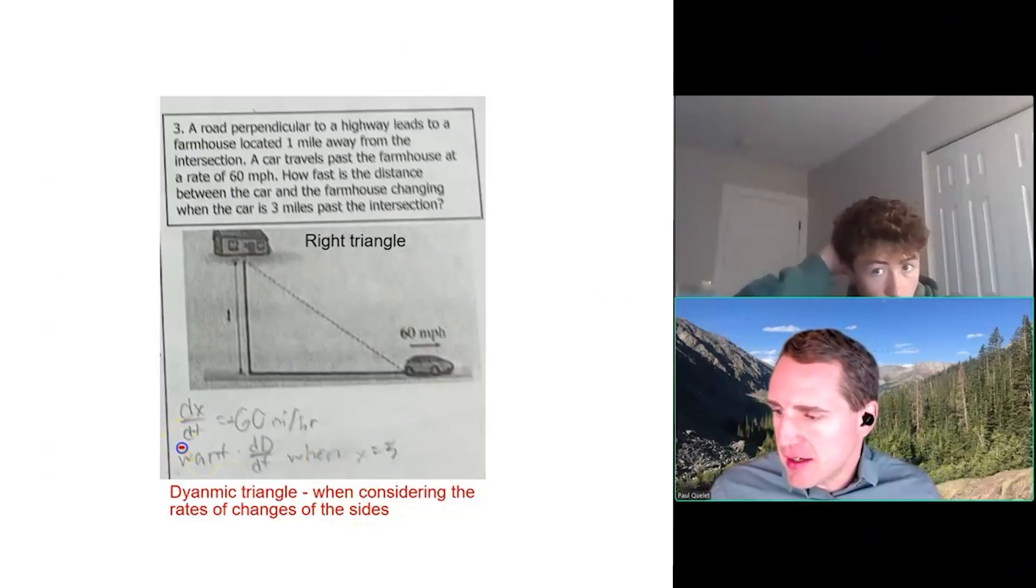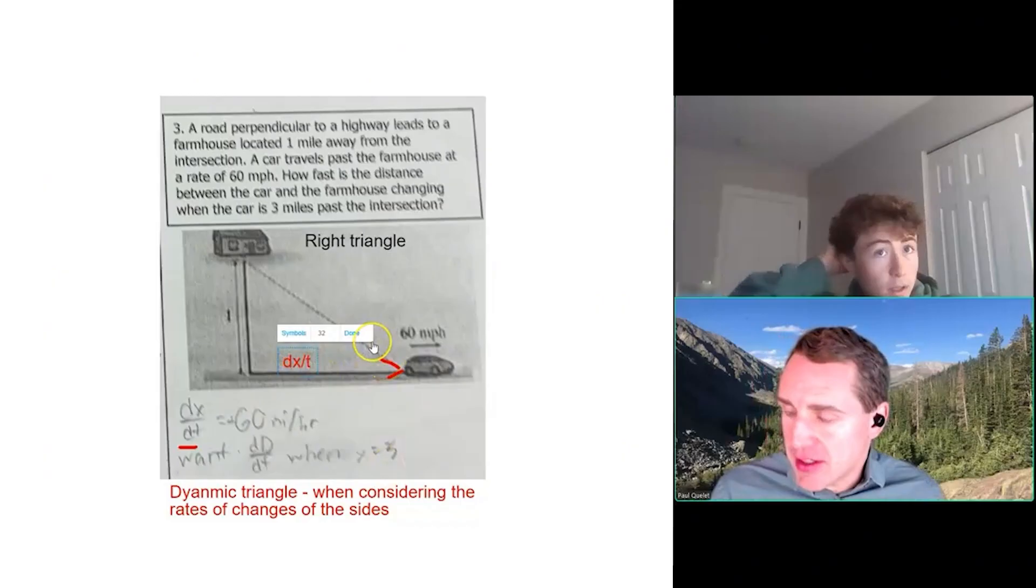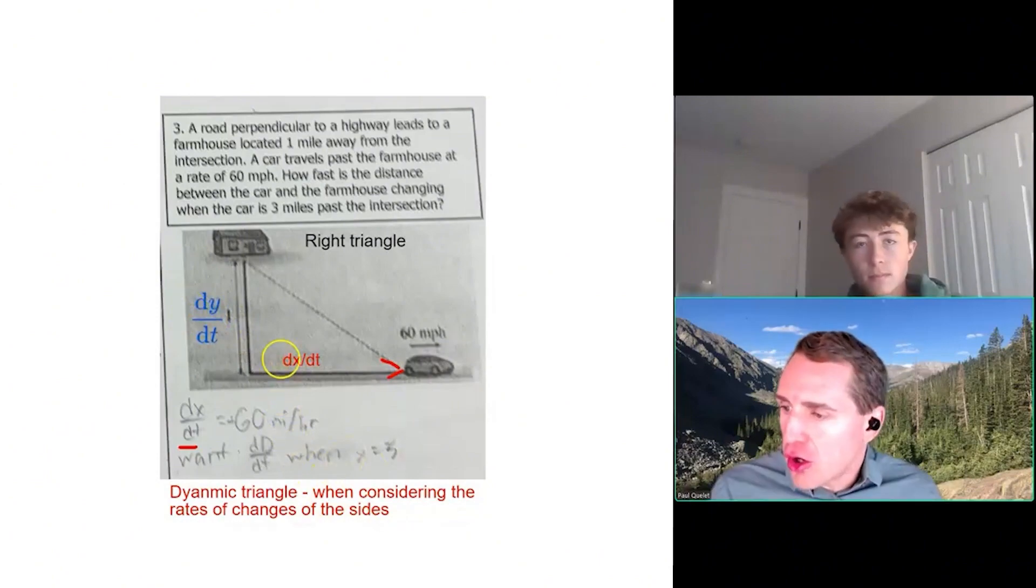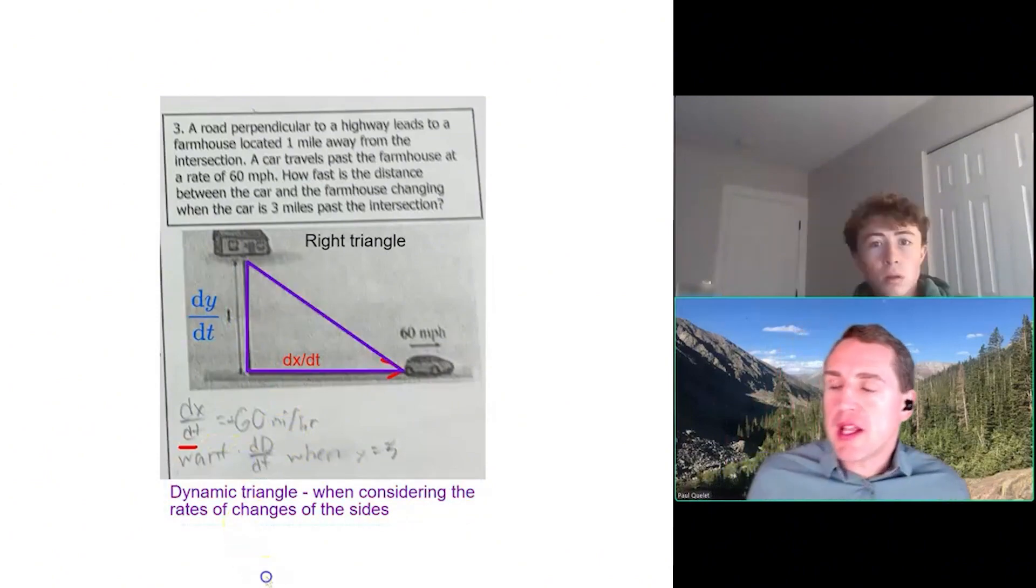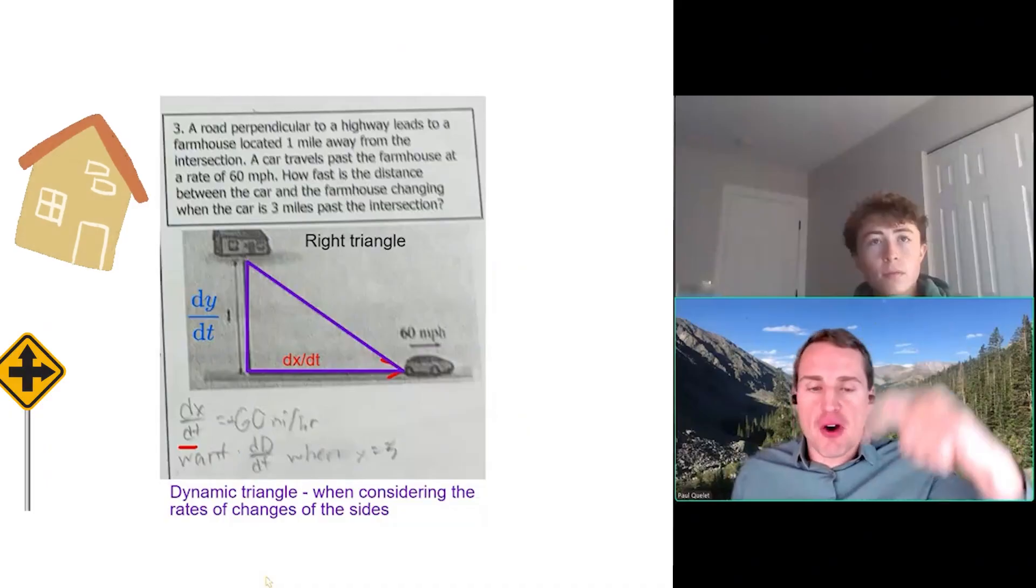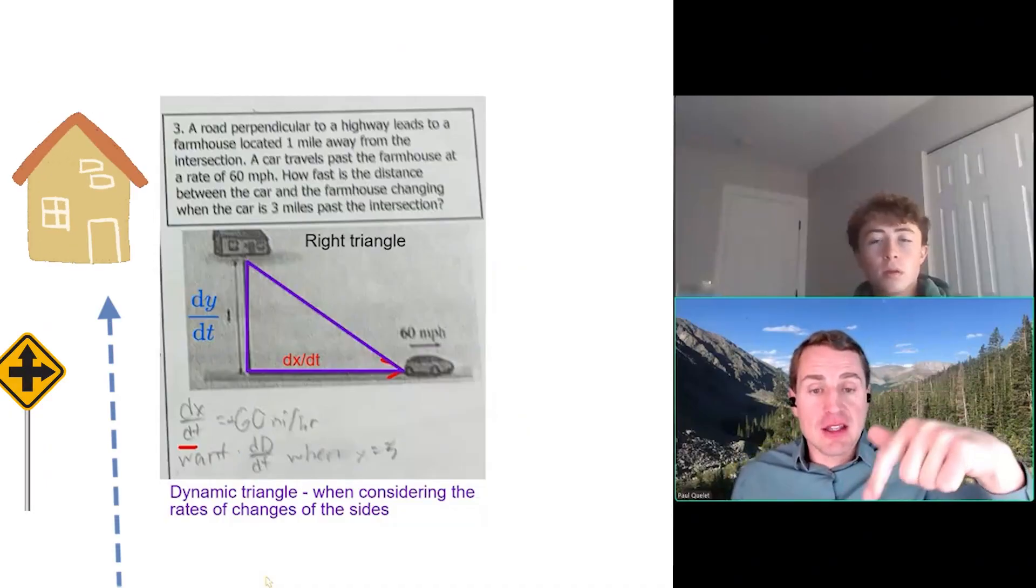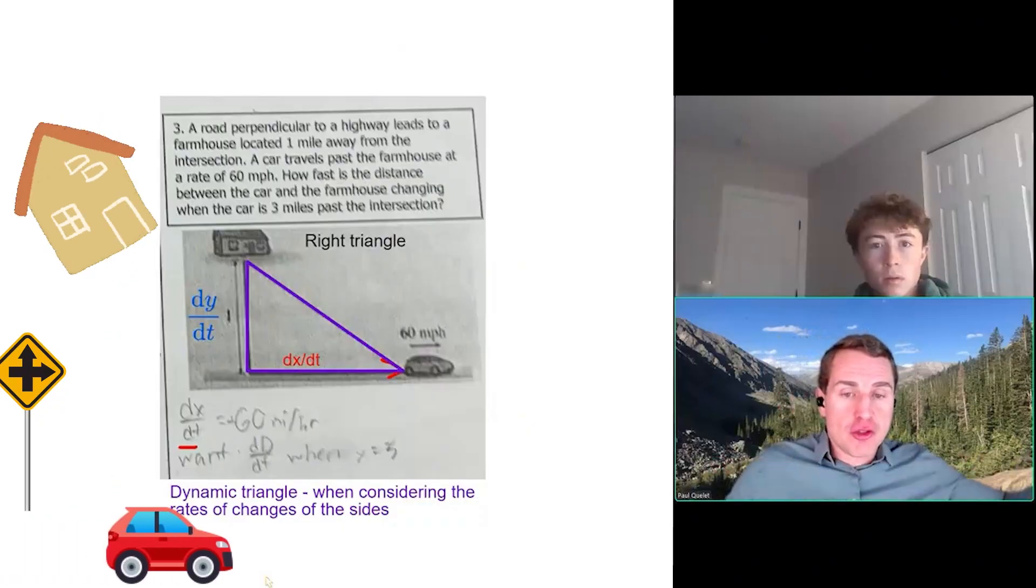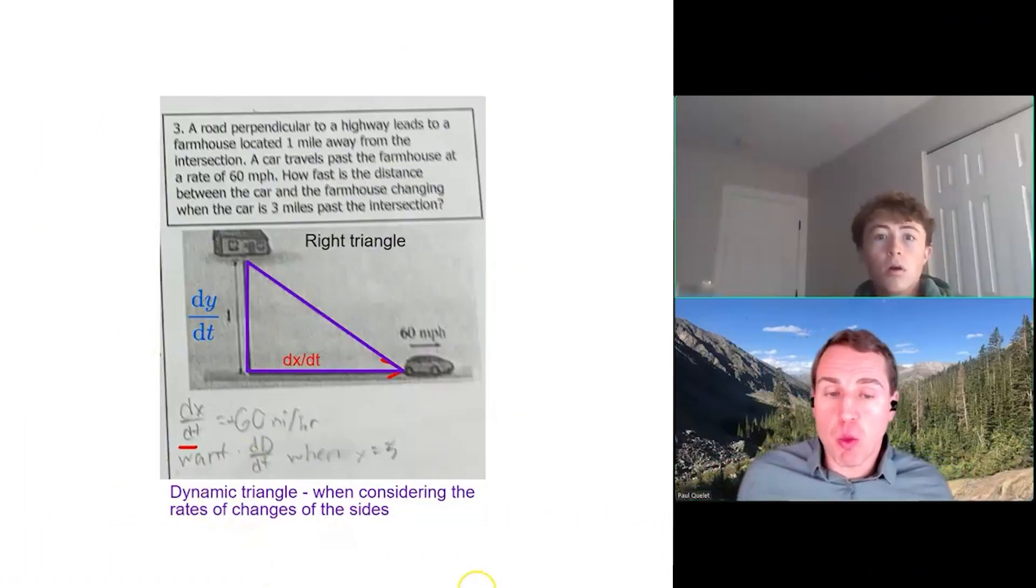So it's definitely a right triangle, just like you've got here. You've got dx/dt, 60 miles per hour. So that's how x is changing in time. Even though it may seem silly, we need to consider dy/dt along the vertical. So when it comes to the distance to the farmhouse vertically in the y direction, is that changing at all as the car goes past? No.